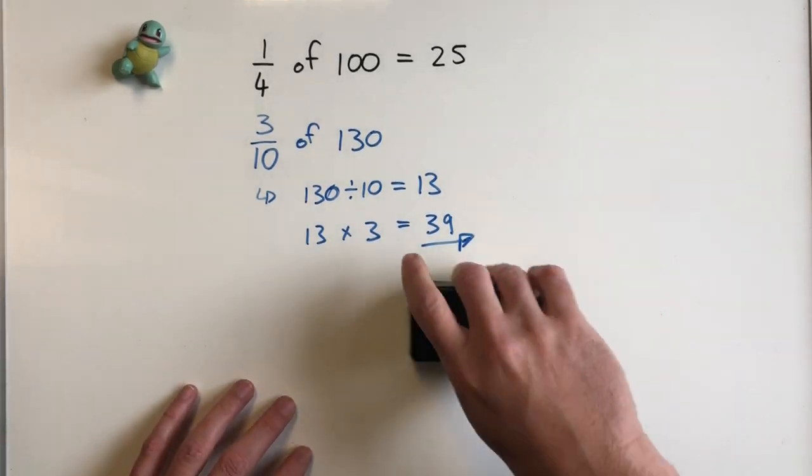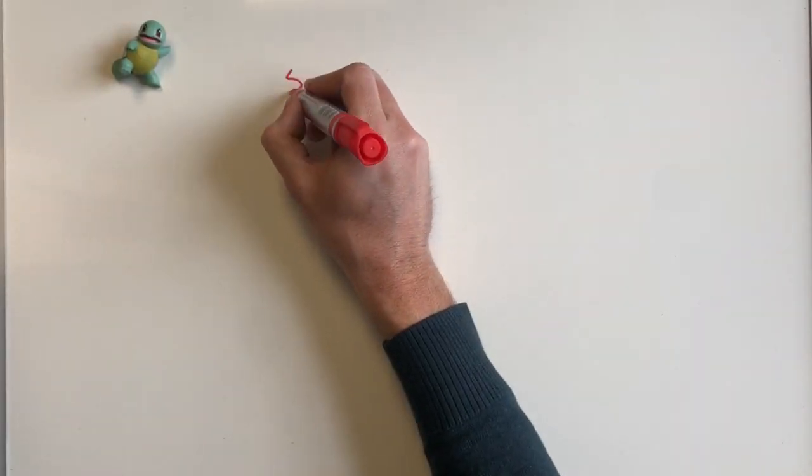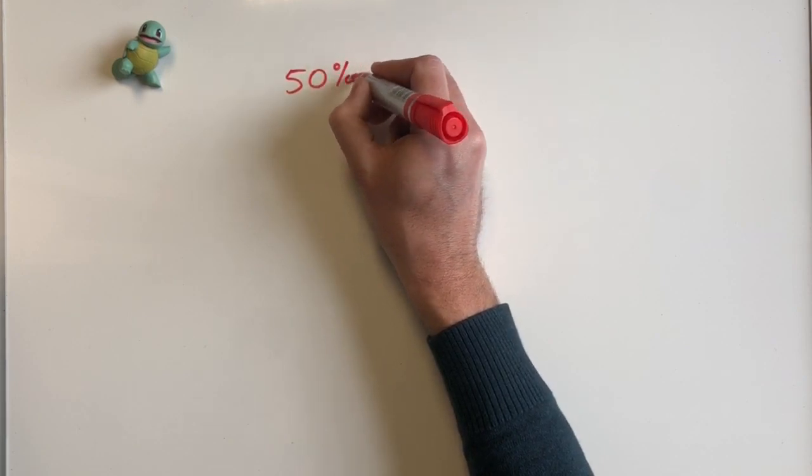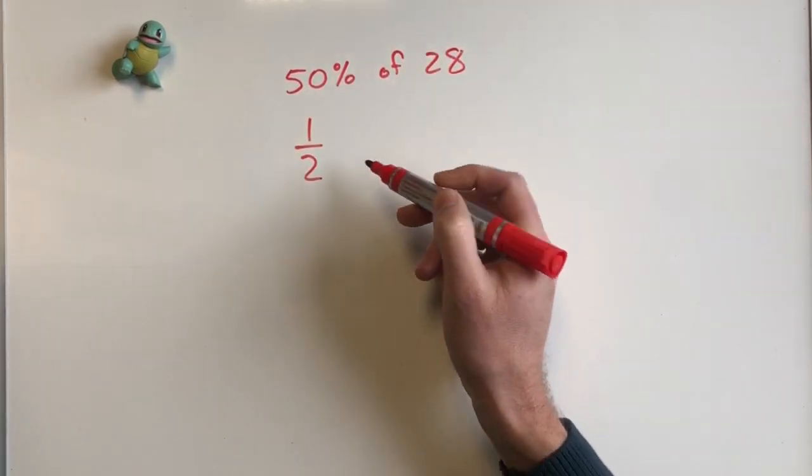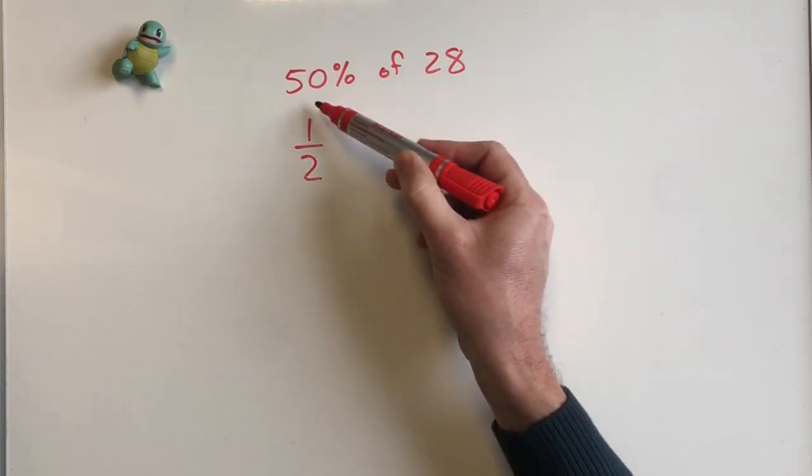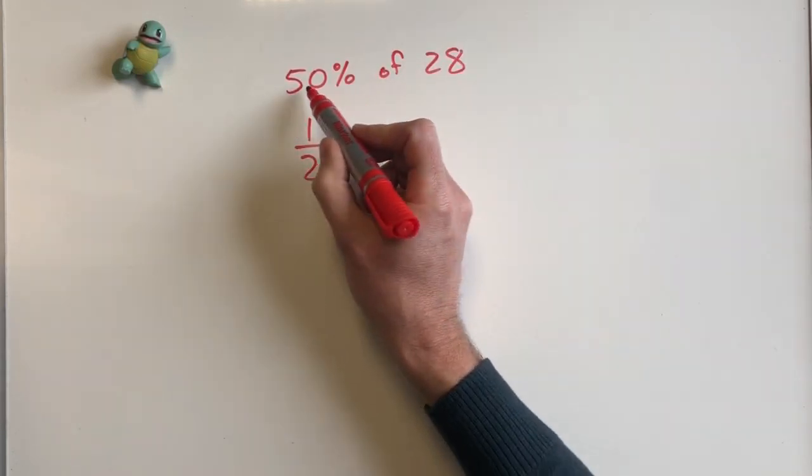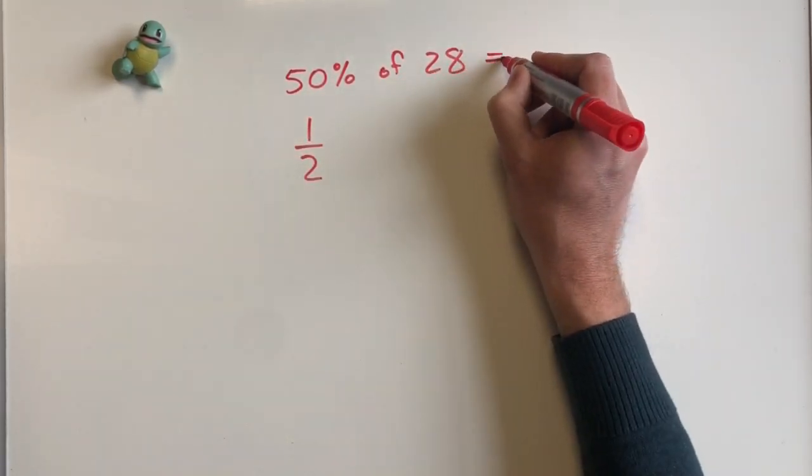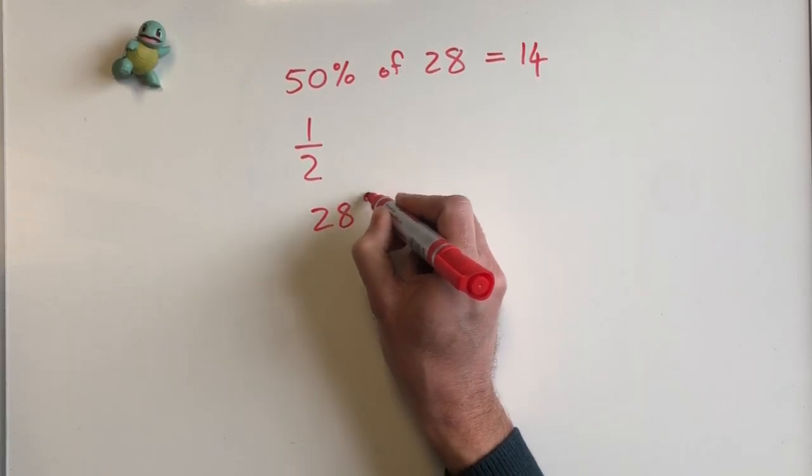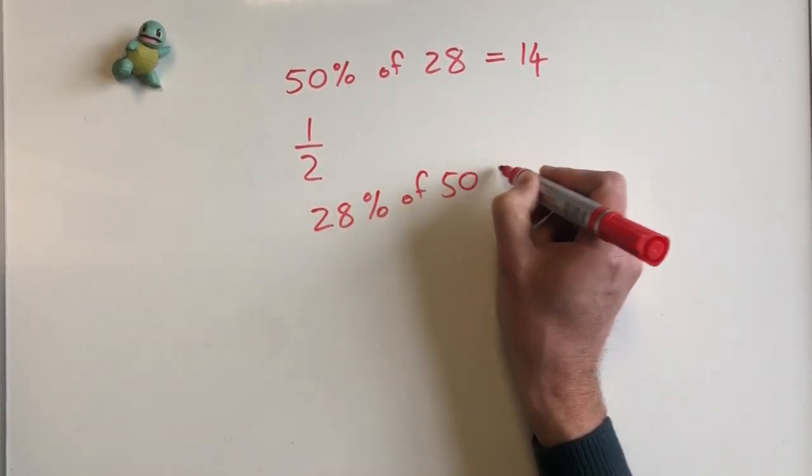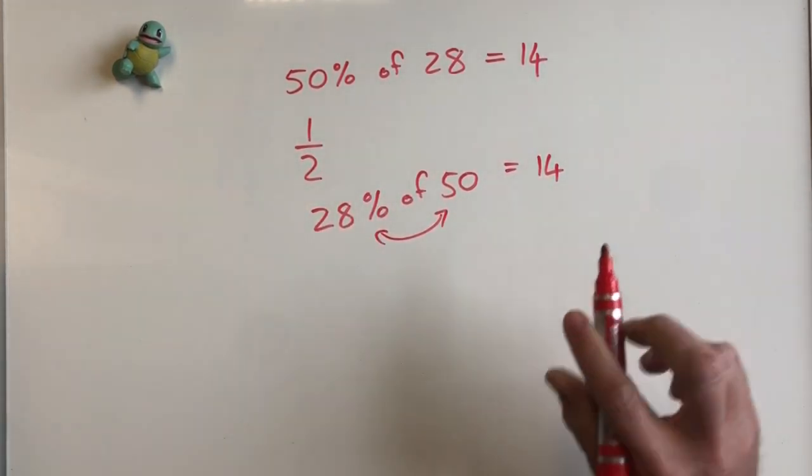I just want to say one more trick. Sometimes they give us percentages instead of actual fractions, but we can just work out with fractions. Let's say I wanted 50 percent or one-half of 28. Obviously 50 percent of 28 would be 14, but if I asked you 28 percent of 50, it would also be 14. So I can switch these around - just a little math trick.